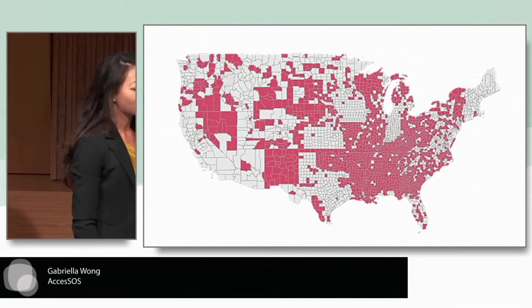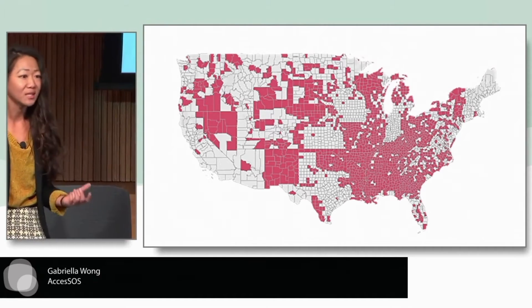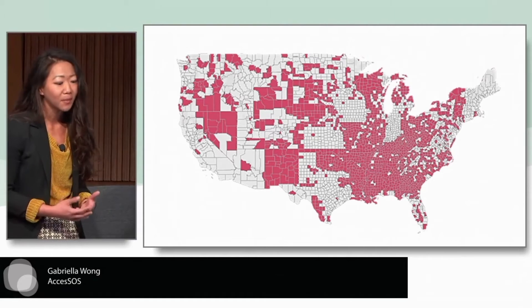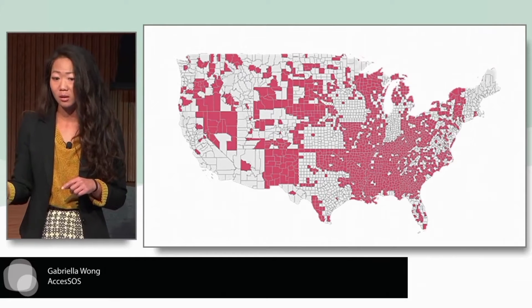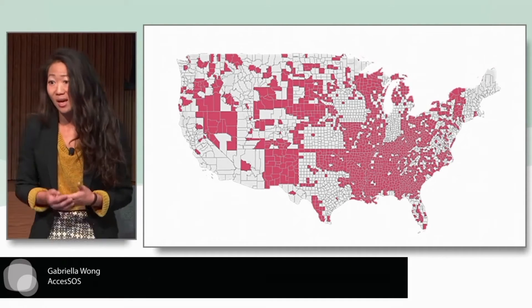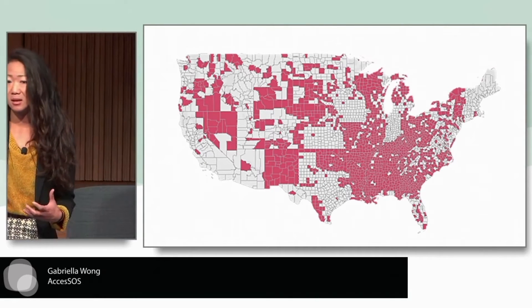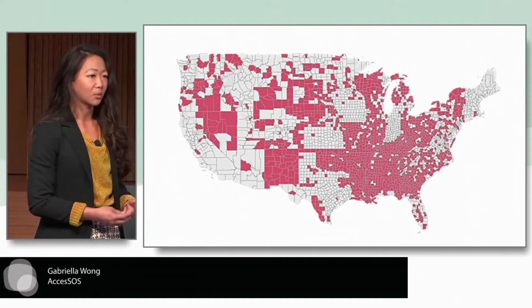70% of 9-1-1 call centers can't receive texts, but there are 37 million Americans like my parents who can't call 9-1-1. Due to aging legacy tech, the soonest the United States would get 100% access is in 2030. That's too long to wait.